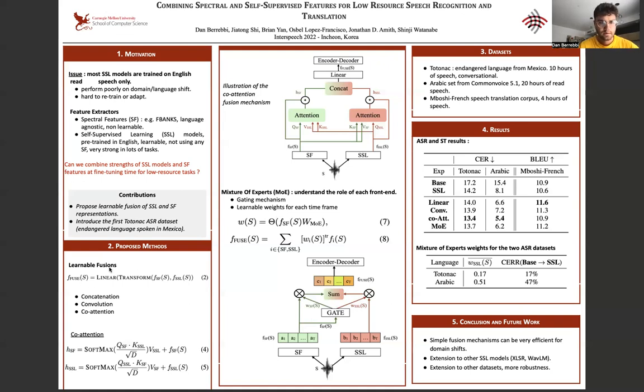And then we'll use fusions that are described by this generic function here, equation two. You have the two features, the two representations on the signal s: f of spectral features on the signal s and the output of the SSL model of the signal s. And then you're going to transform those features and finally just linearly project them. And the transformation could be concatenation, simple convolution, or co-attention. I'm going to describe the co-attention one.